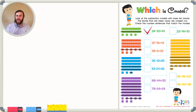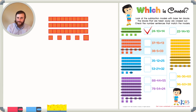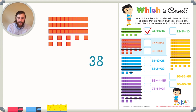Let's take a look at the next problem. We have 3 longs and 8 cubes. With 3 longs, that's a 3 in the tens place, and 8 cubes gives us an 8 in the ones place, giving us a total of 38. Sometimes you don't even need a place value chart.